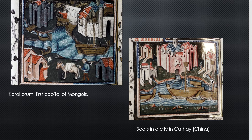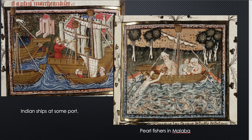On the left is a city identified as Karakoram, which was the first capital of the Mongols when they came down into China — apparently they had built a great palace there. I hope you notice that most of these city shots have rivers with boats on them. On the right is another city in Cathay, China, with lots of boats on the river — no people, no turbaned people, no any people.